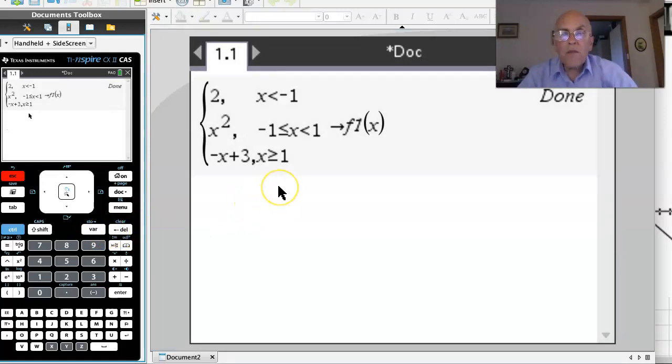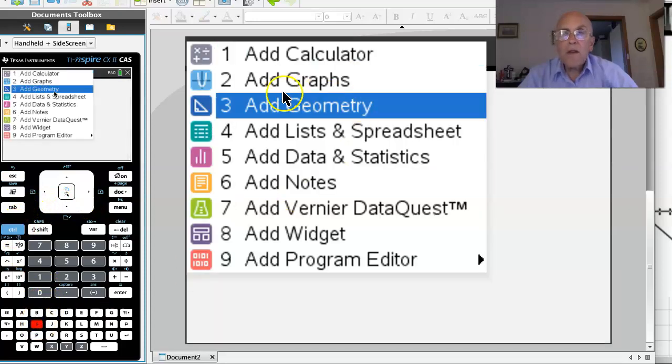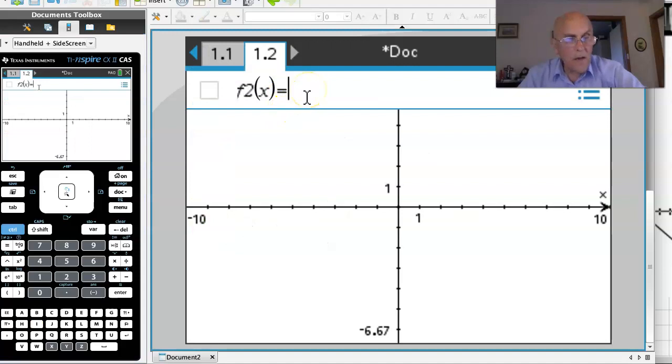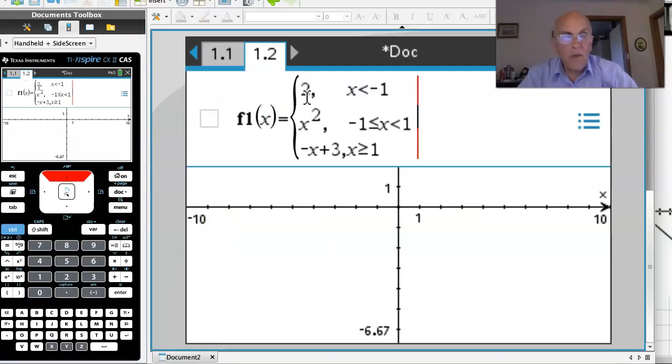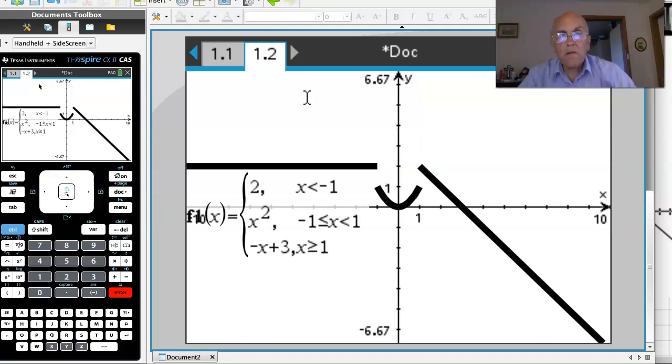Now what we're going to do is go over the page and we'll get a graph screen happening here. So I need to go control insert, control insert. There we go. Add graphs. Ah, look at that. Now I'm going to go up 1. That's f2 of x. I'll go up 1, f1 of x. And there it is, there's the one that I just defined. And I'm going to hit enter.